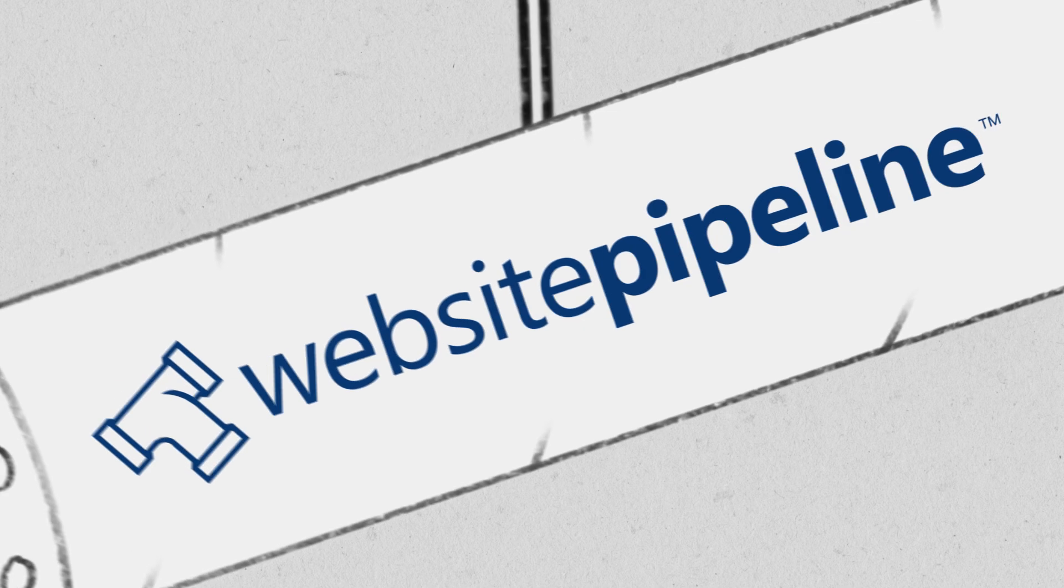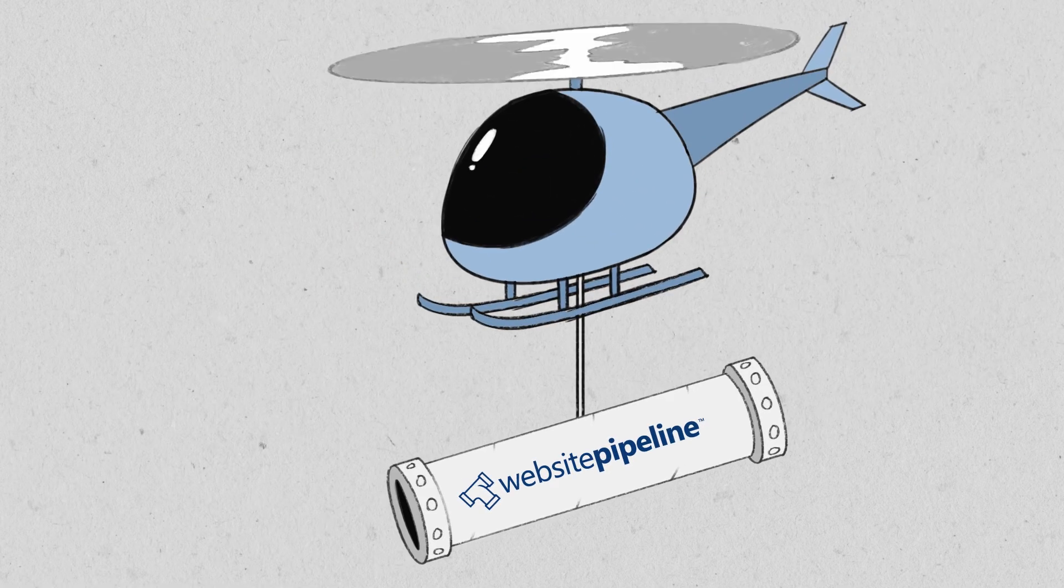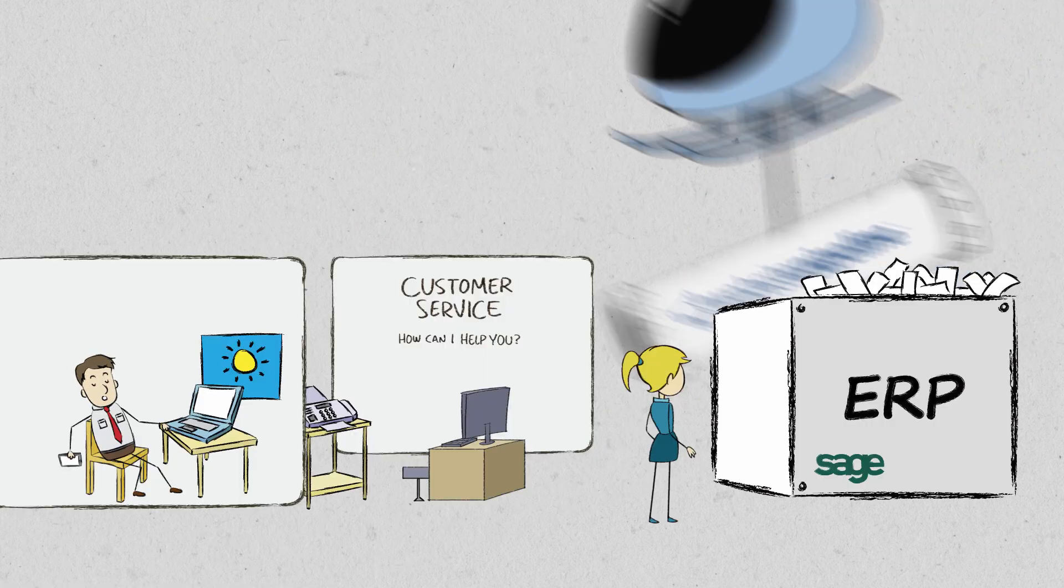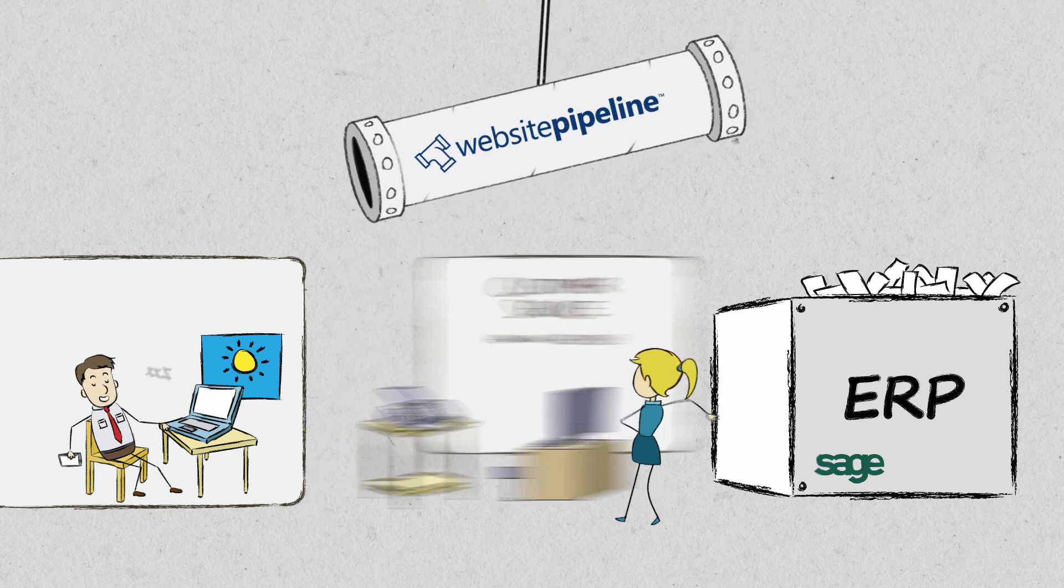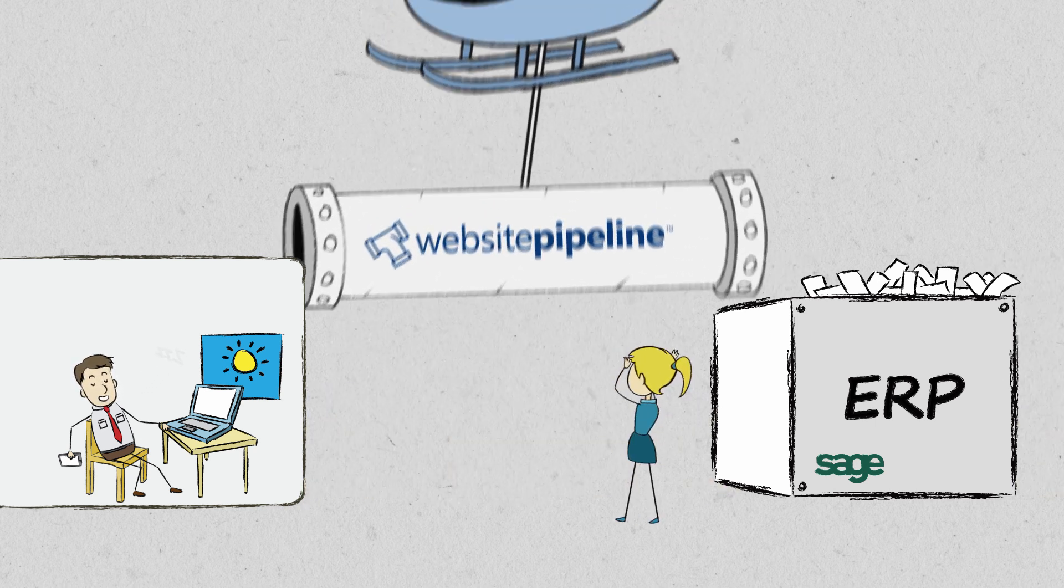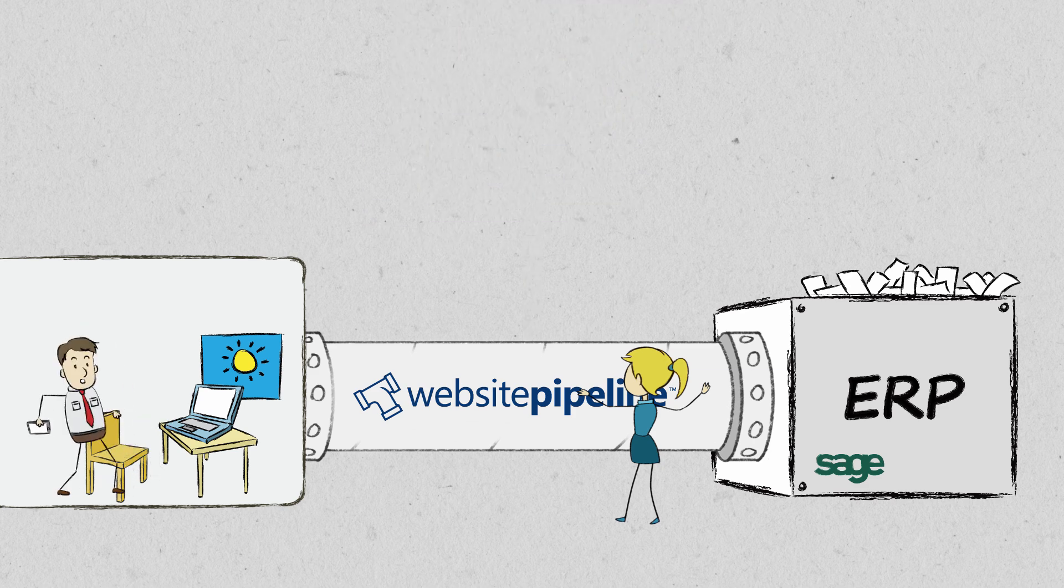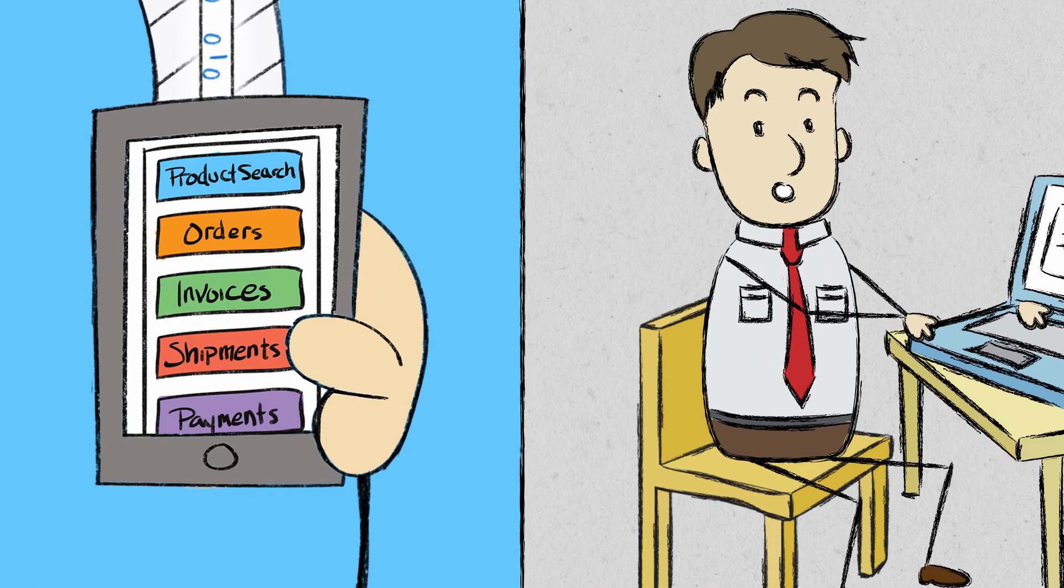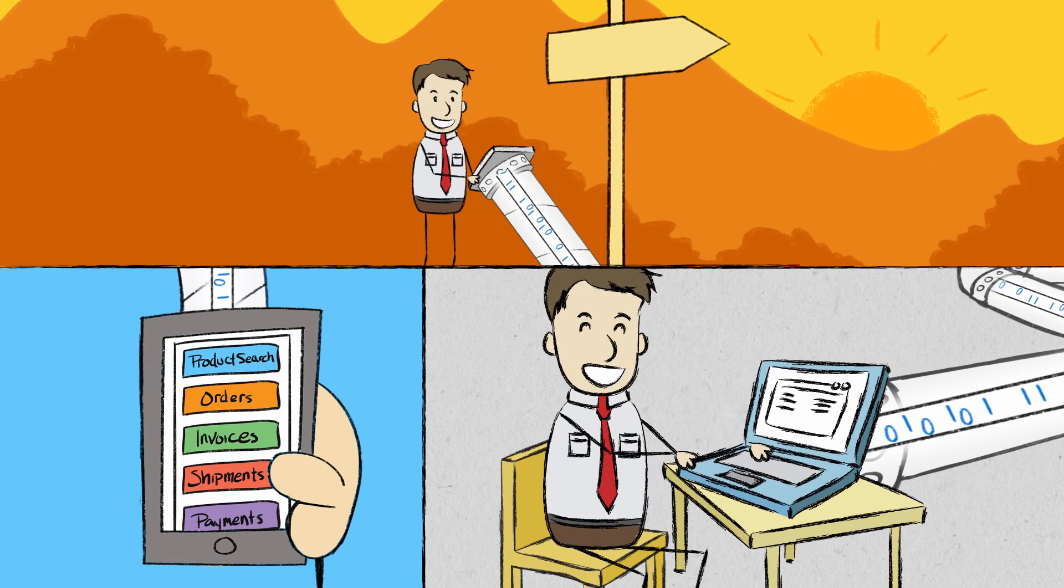But with Website Pipeline, waiting will be the thing your customers won't do. Without interfering with any existing processes and procedures, Website Pipeline's anywhere anytime self-service portal attaches directly to your ERP software and connects directly to your customers, on any device, wherever they are.